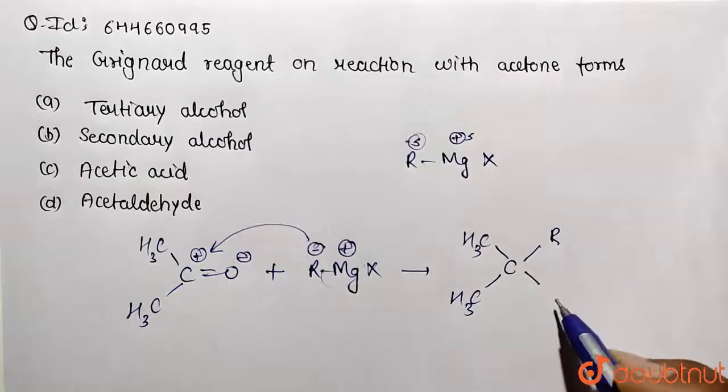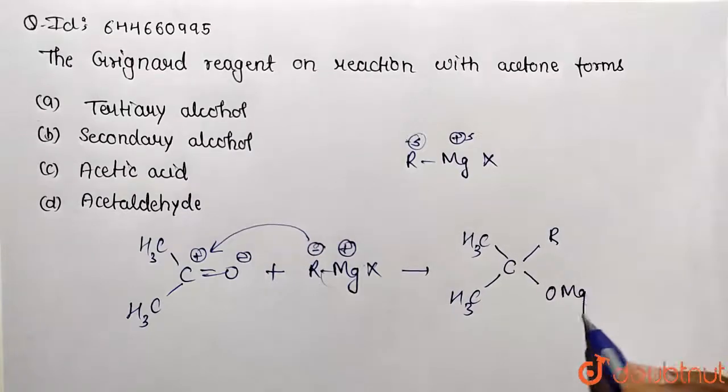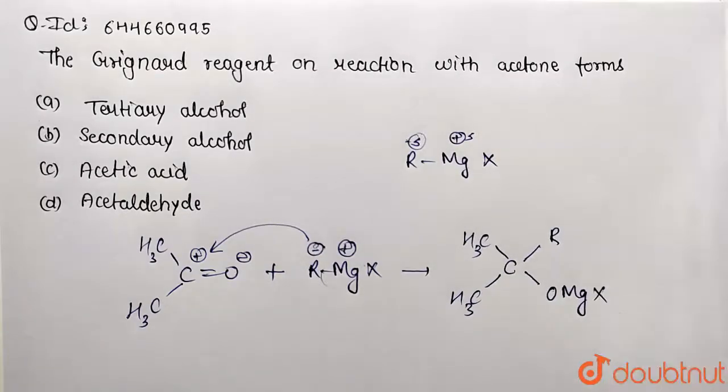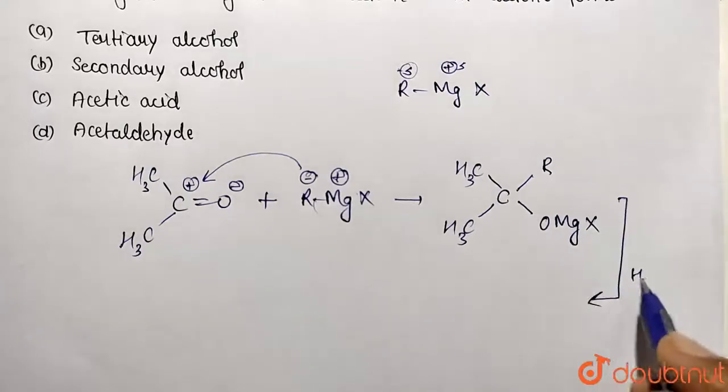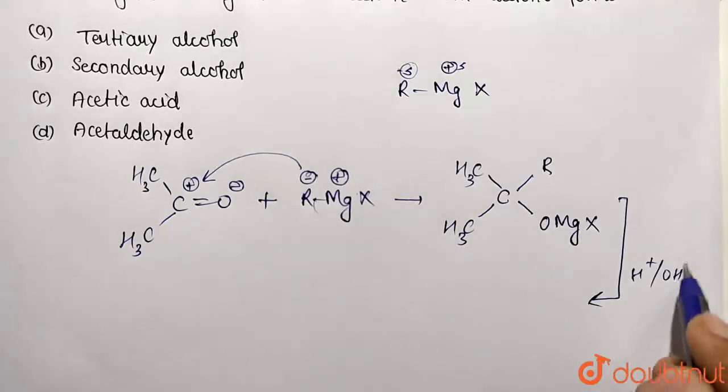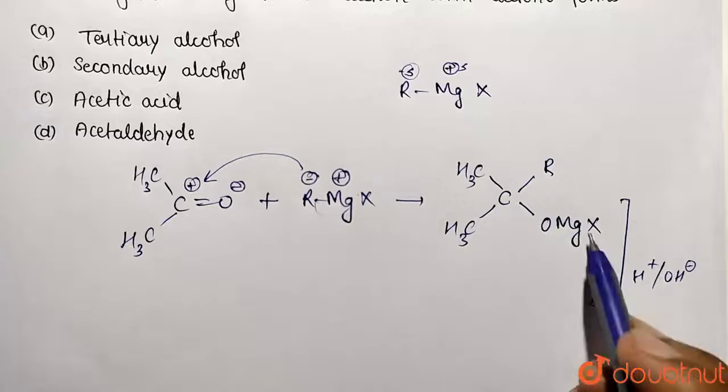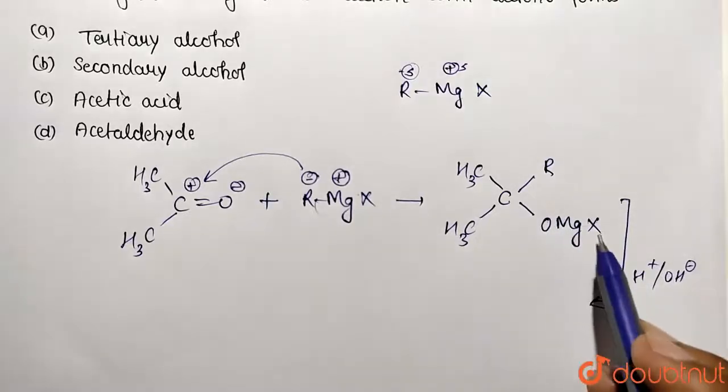OMgX. In the second step, water will be added. So water is going to provide H+ ions and OH- ions. So corresponding product of Mg(OH)X will be removed out.